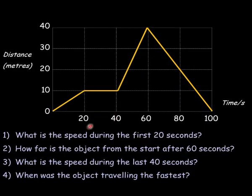So here's a typical kind of question you might get. What is the speed during the first 20 seconds? Well, it's going from 0 to 10 in 20 seconds. So it's 10 metres in 20 seconds. So the answer is 0.5 metres per second.